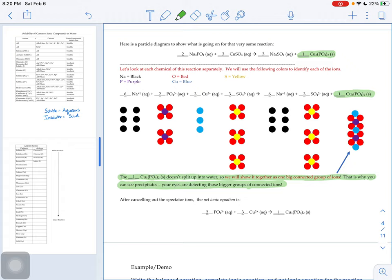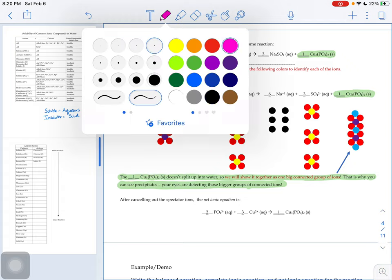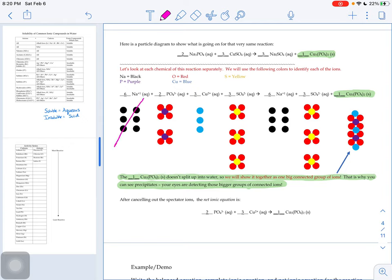So if we look at this at the particle level, after we cancel out those spectator ions, the 6Na+ looks exactly the same during the course of the reaction. Nothing happens to it on the left side versus the right side. Same with our sulfates. They look exactly the same. Nothing happened to them.